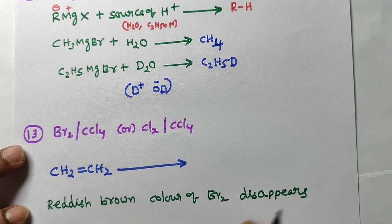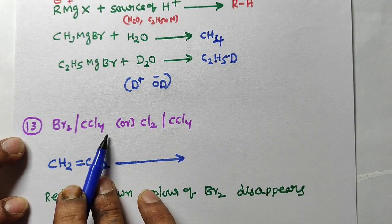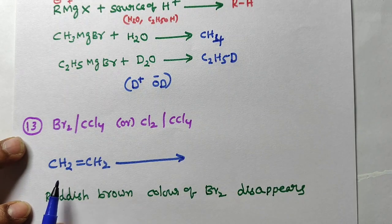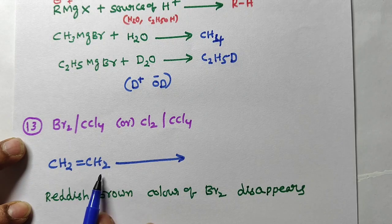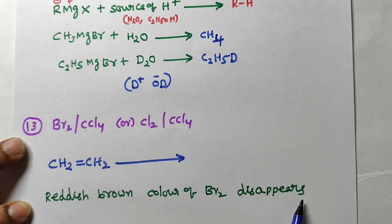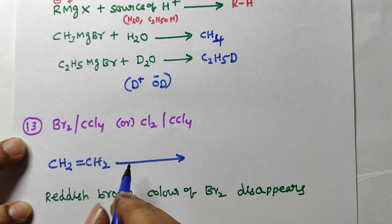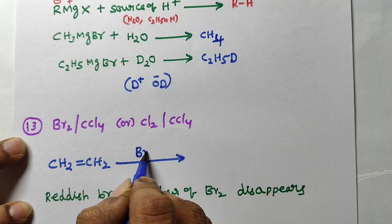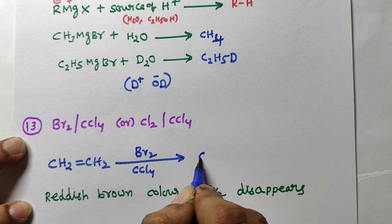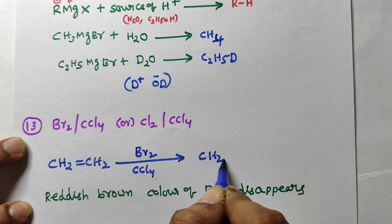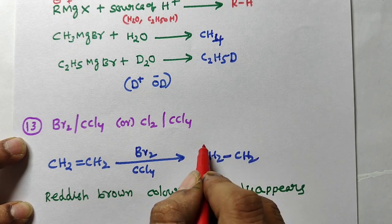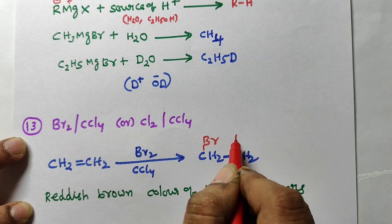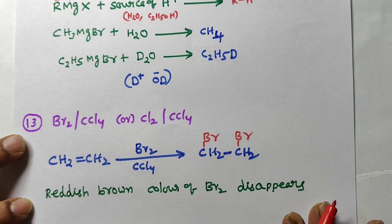Next reaction: bromine in carbon tetrachloride (CCl4) or chlorine in CCl4, which is used to find out a double bond or triple bond. When bromine reacts with an alkene, the reddish-brown color of bromine disappears. For example, bromine in CCl4 with an alkene — one bromine adds to each carbon of the double bond to give a dibromo product.